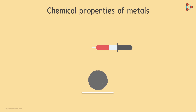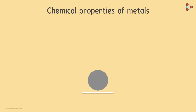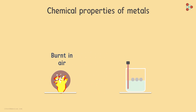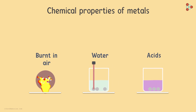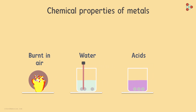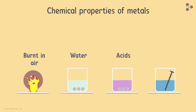When we are looking at chemical properties of metals, there are a few things we will look at. We will see what happens when metals are burnt in air, when metals react with water, when metals react with acids, and lastly when metals react with solutions of other metal salts.